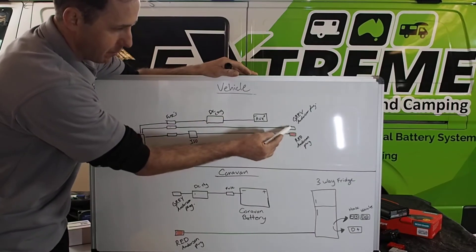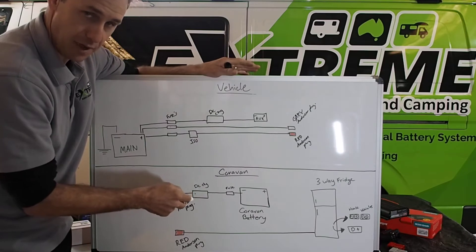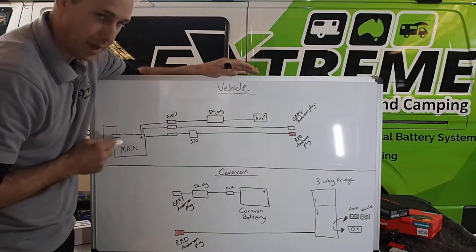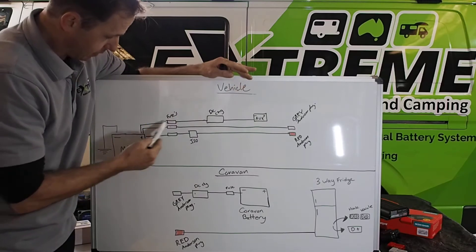So just to recap, grey Anderson plug in the back of the vehicle in this setup with the DC charger in the van must come direct from the main battery, not from the aux battery in the vehicle. So this first line here, this is just a simple DC charger installed in your vehicle.